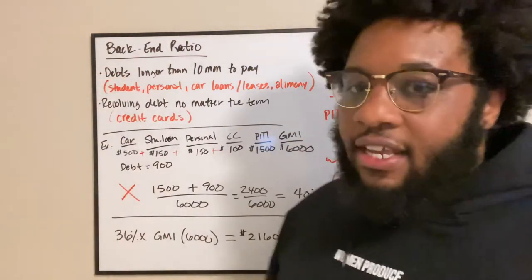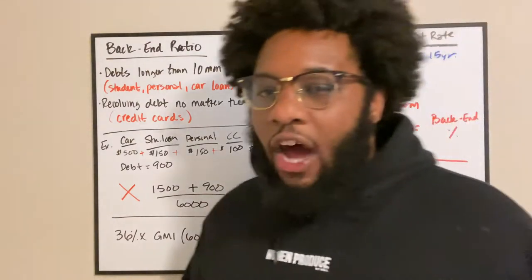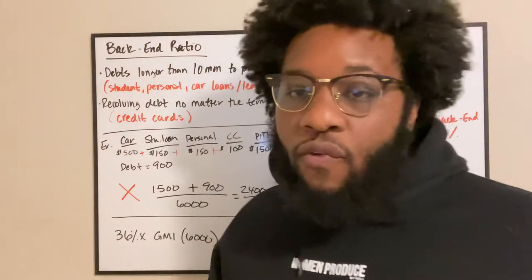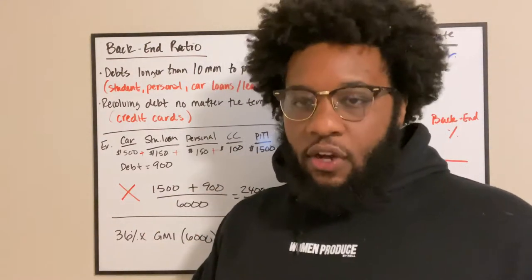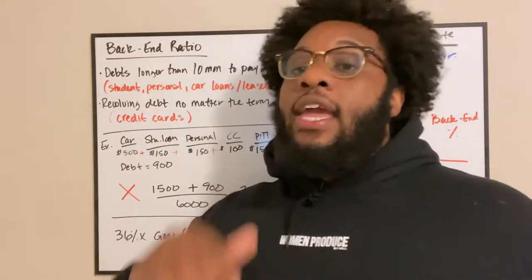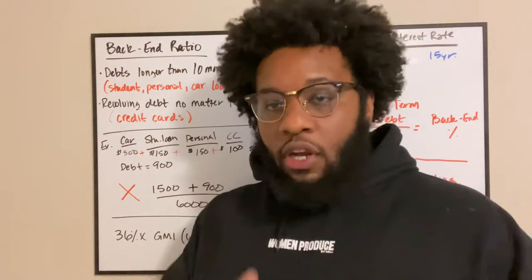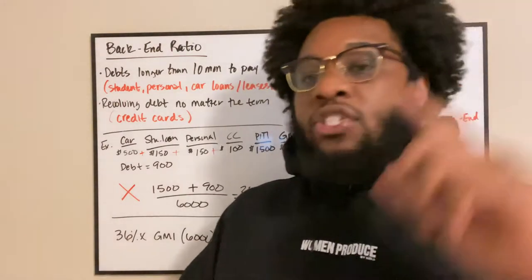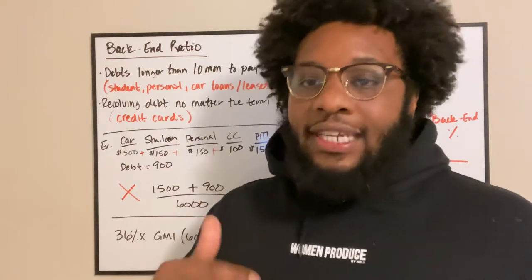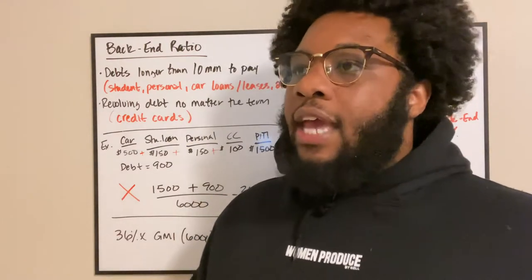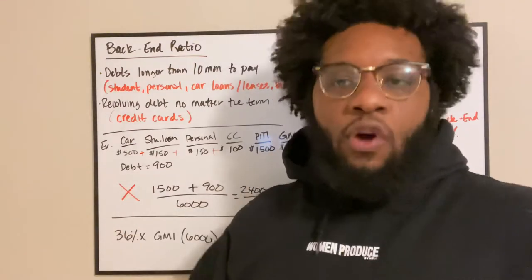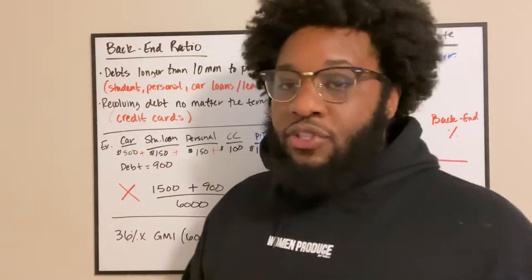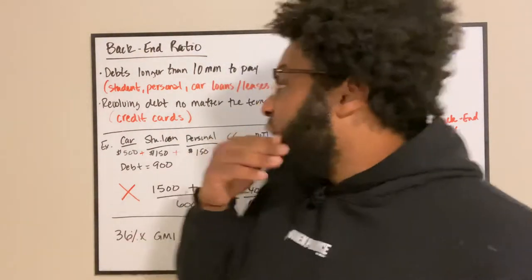But your back-end ratio also covers your debts. What the loan officers, lenders, and mortgage companies are looking for is anything that is over 10 months — they consider that long-term debt. Anything you have to pay after 10 months is long-term debt: student loans, car note, personal loans, any type of installment loan, credit cards. Your credit card minimum payment every month is also considered one of your debts and is factored into this equation.